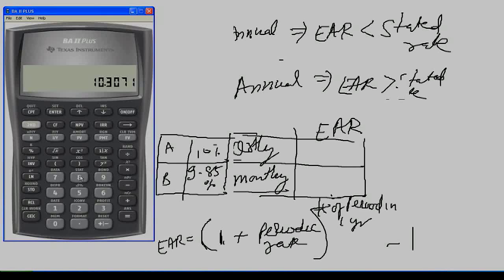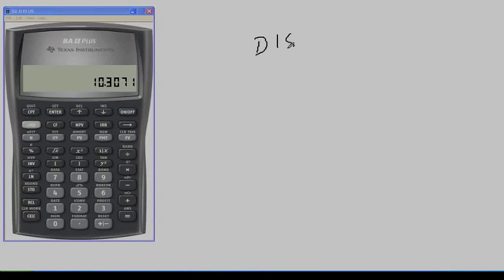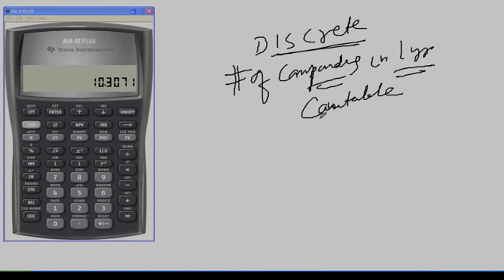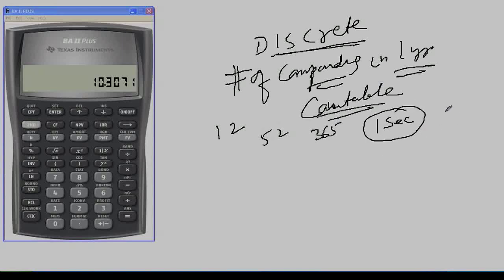One thing I want to stress is that the rates we are using are called discrete rates. A discrete rate is when the number of compoundings in one year is countable — you can count them. Monthly is 12, weekly is 52, daily is 365, and even for one second you can find the number of seconds in a year.